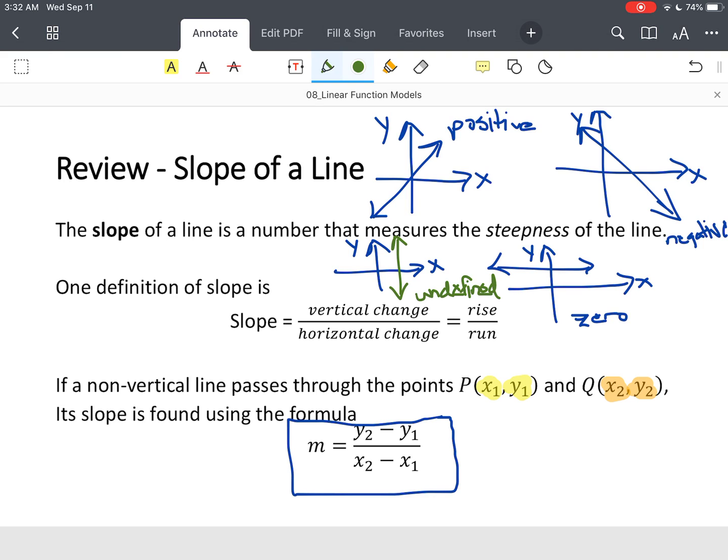So you've got potentially four answers for slope. You've got positive, negative, zero, and undefined.